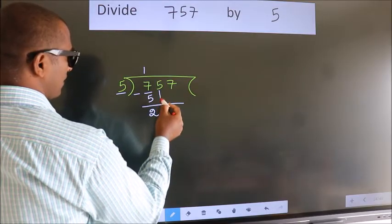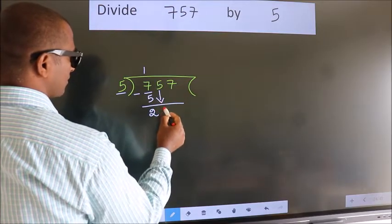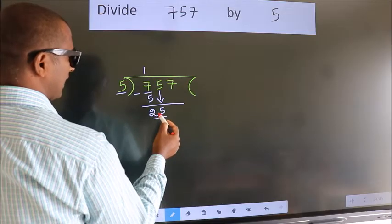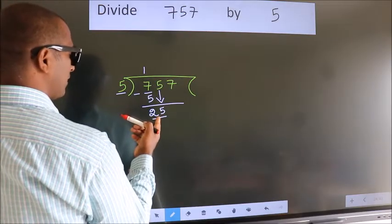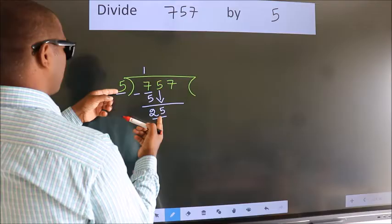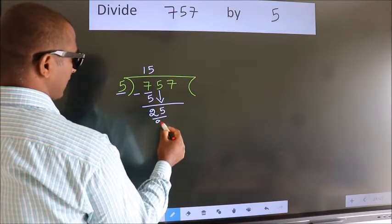After this, bring down the beside number. So, 5 down. So, 25. When do we get 25? In 5 table. 5 fives, 25.